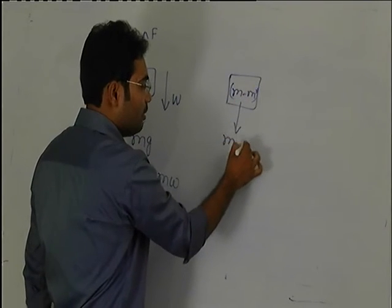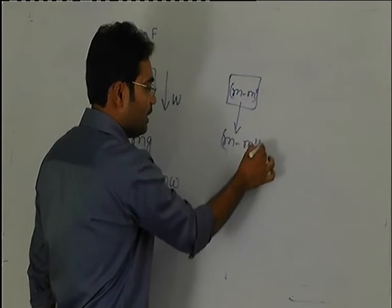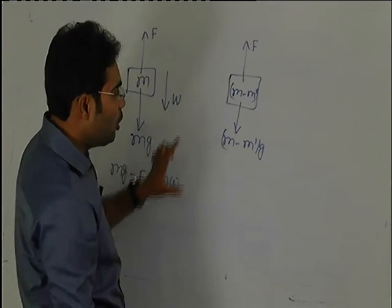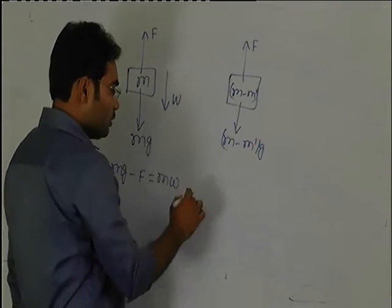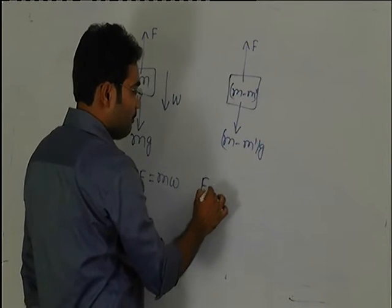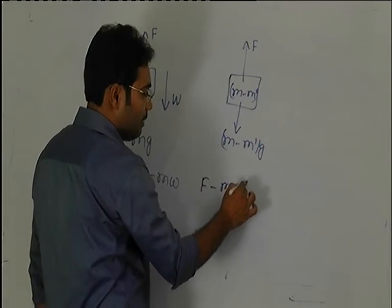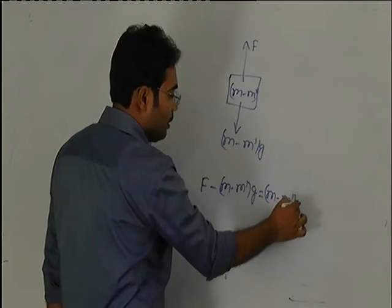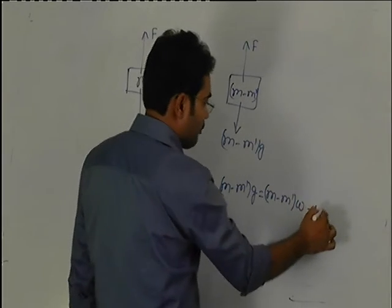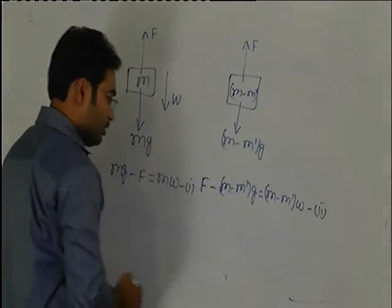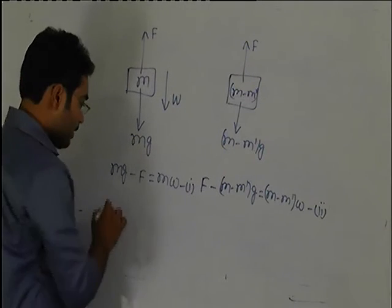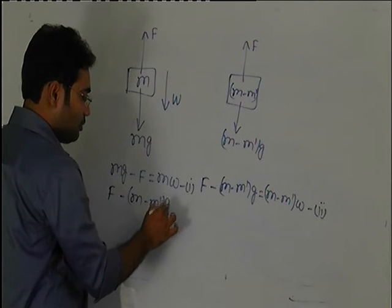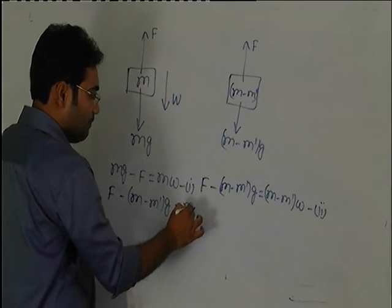For upward motion, the force equation becomes F minus (m - m')g equals (m - m')w, where the acceleration is now upward with magnitude w.